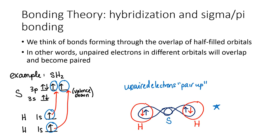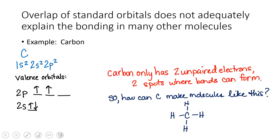The same thing is happening over here on the right. This is overlapping what we call standard orbitals — the standard shapes, the SPD that we would predict based on quantum theory and electron configurations. However, these standard orbitals do not adequately explain the bonding in lots of other molecules.